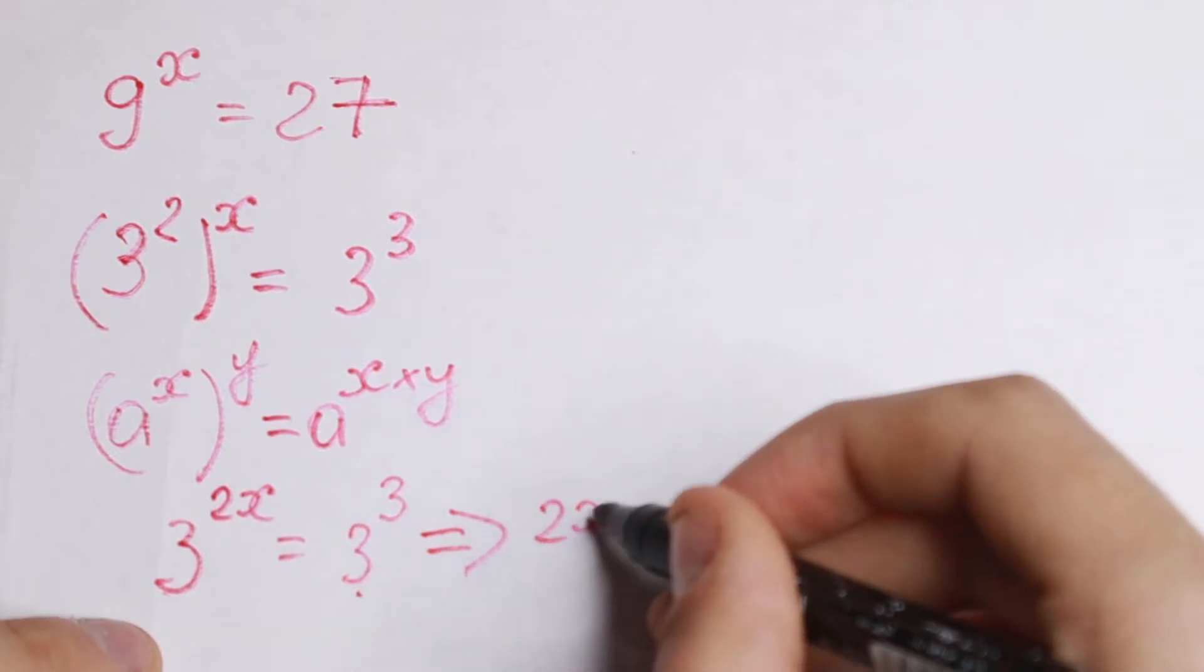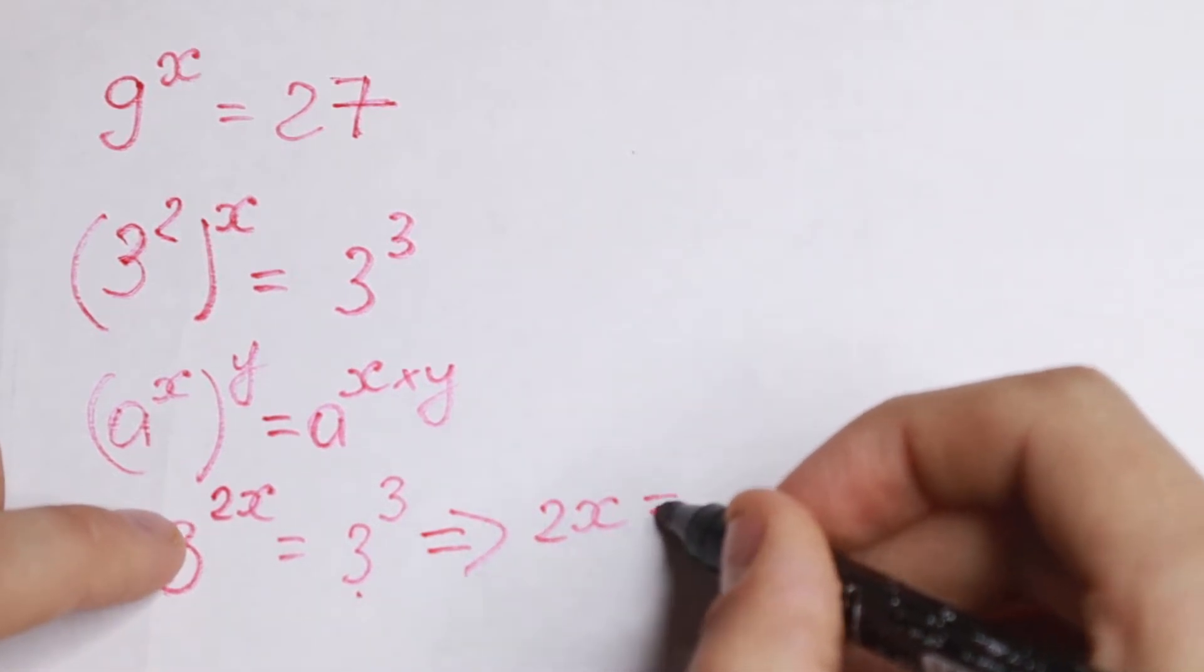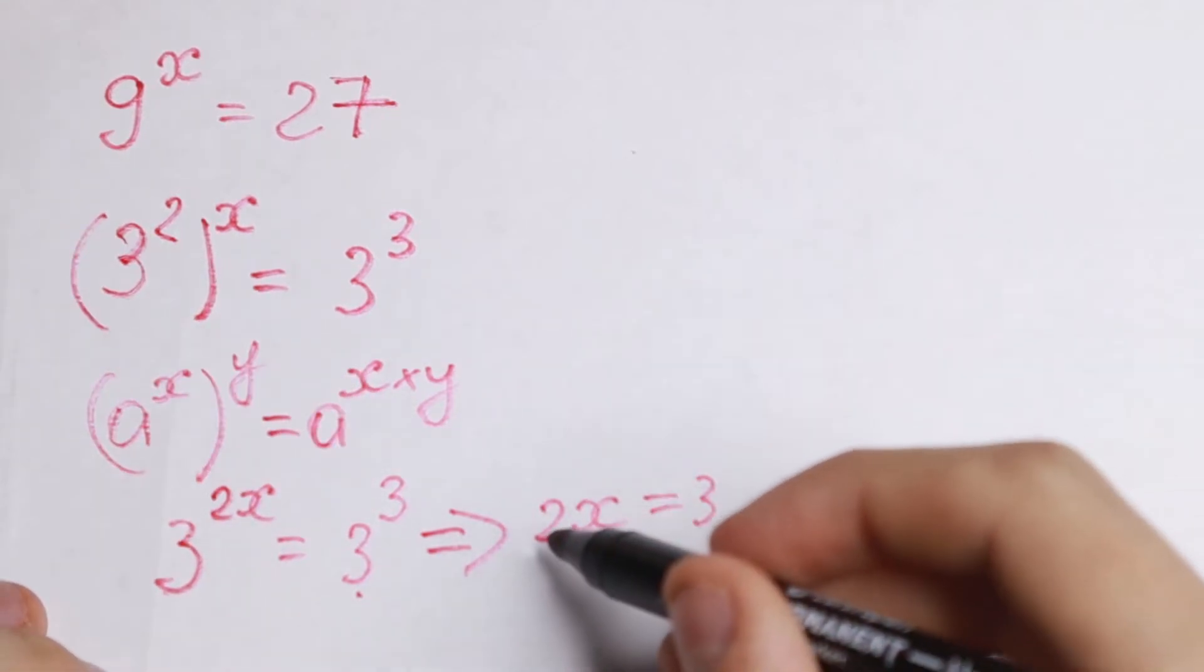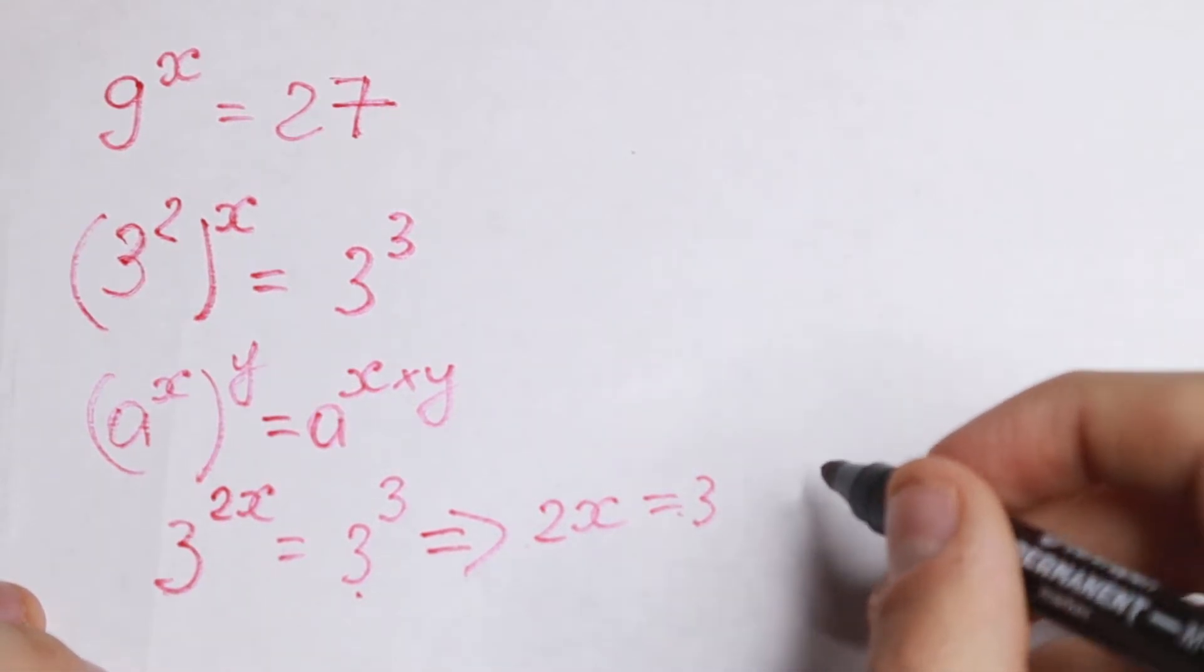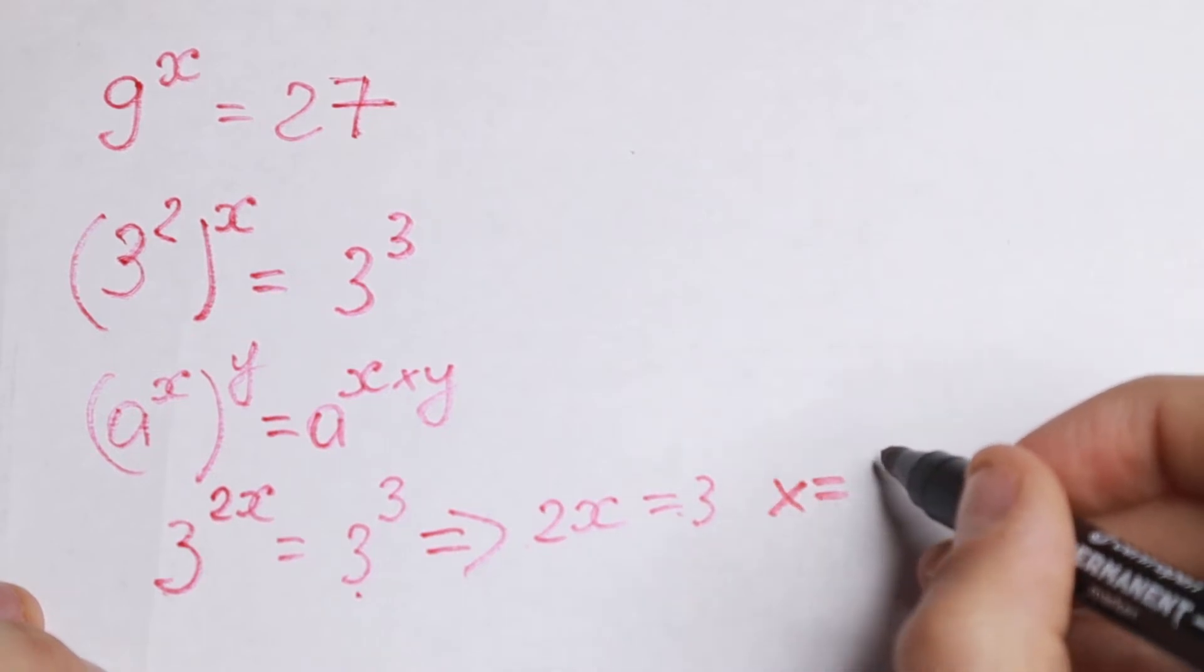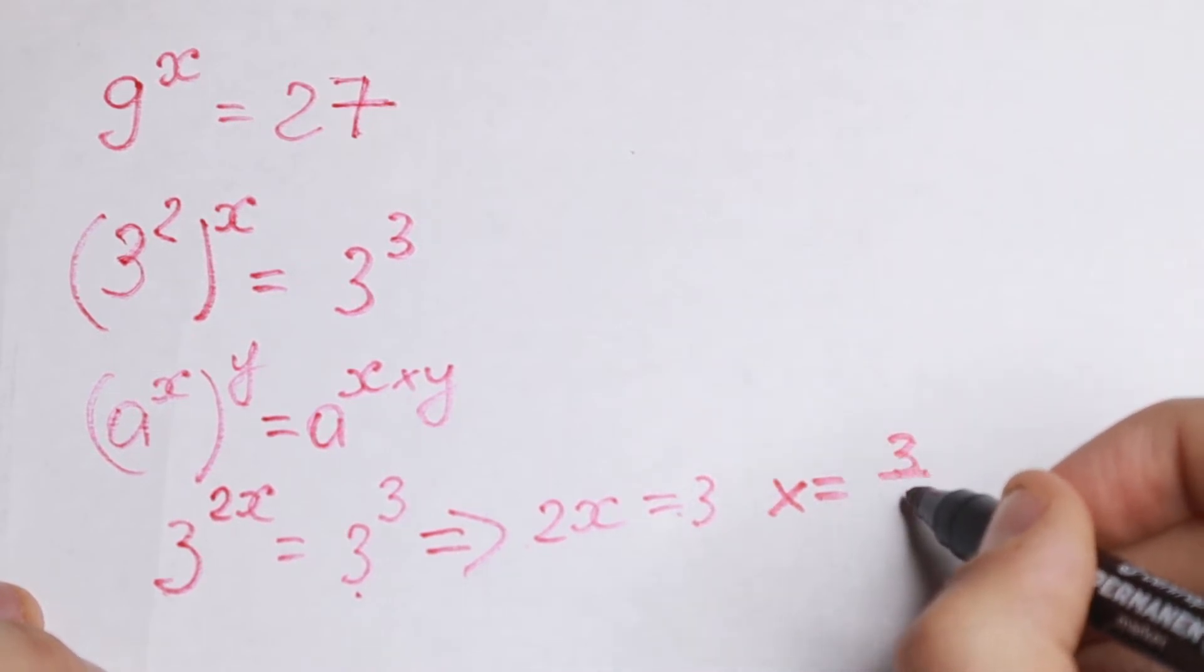So we will have 2x on the left equal to 3 on the right. And if we divide both sides by 2 we will have our answer that our x is equal to 3 over 2.